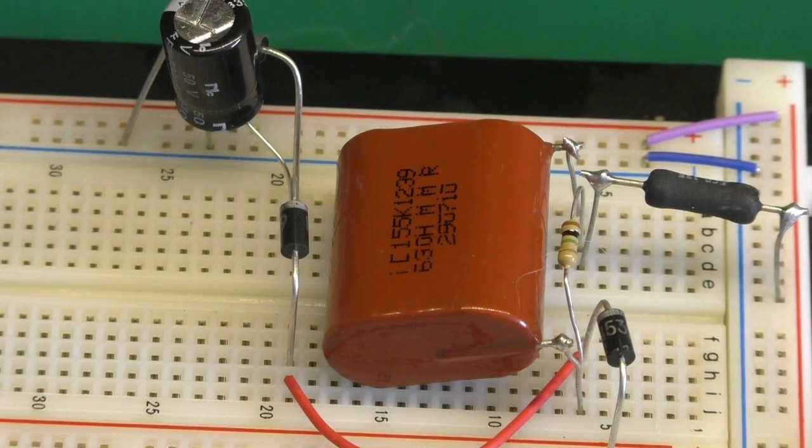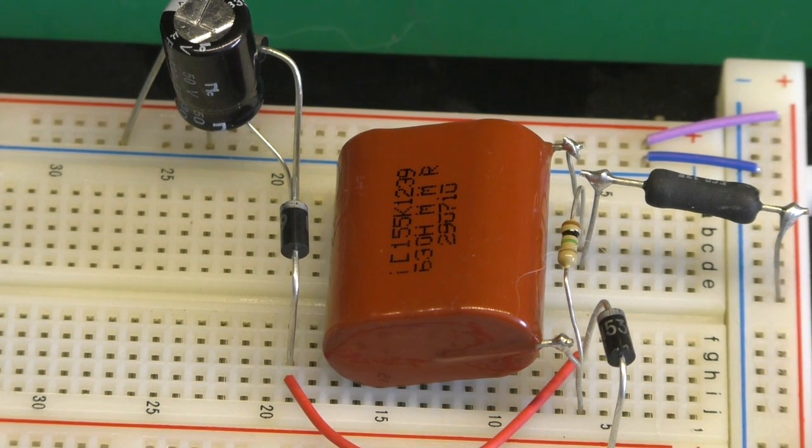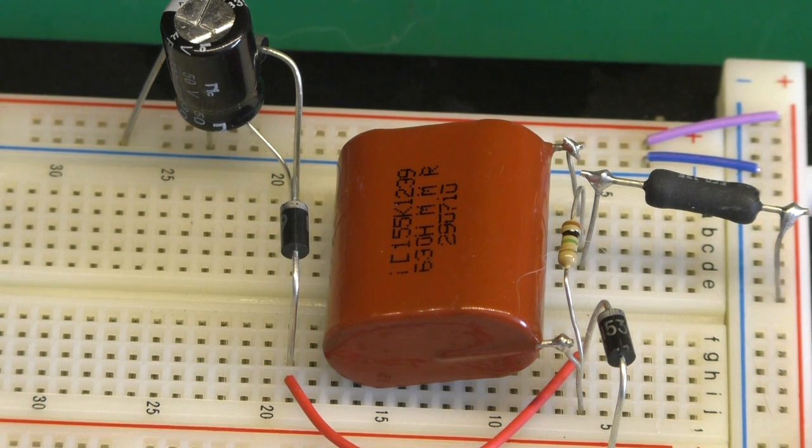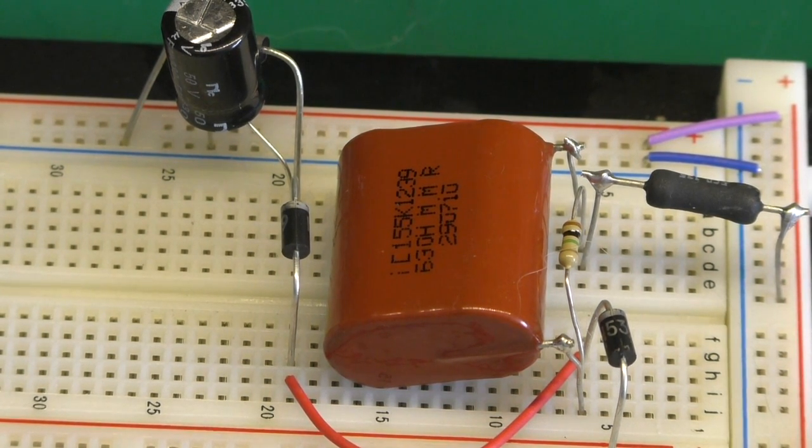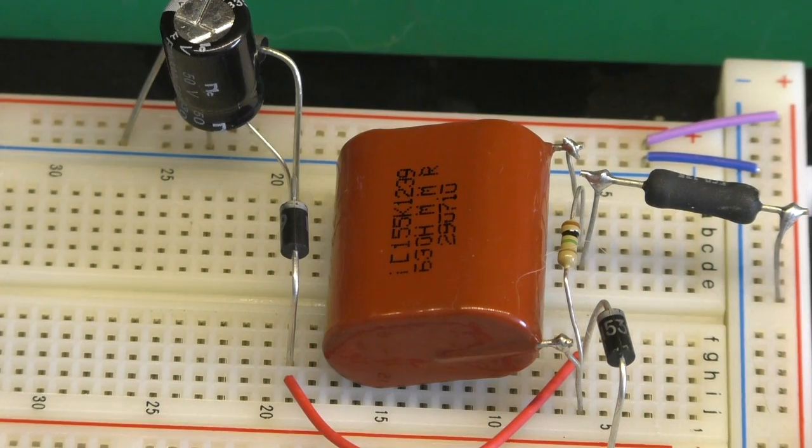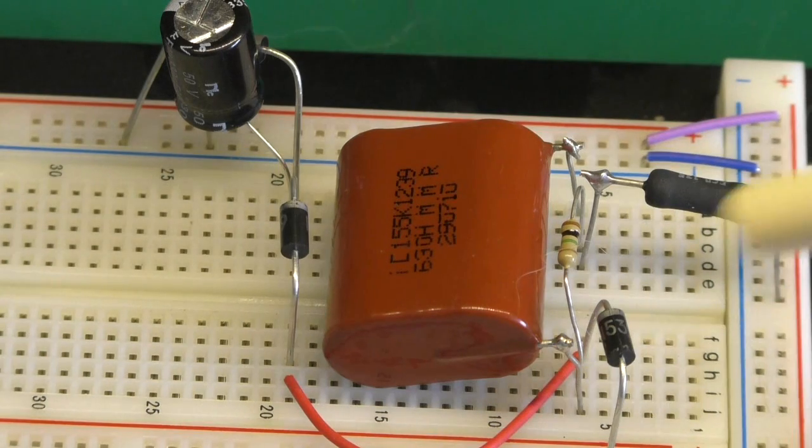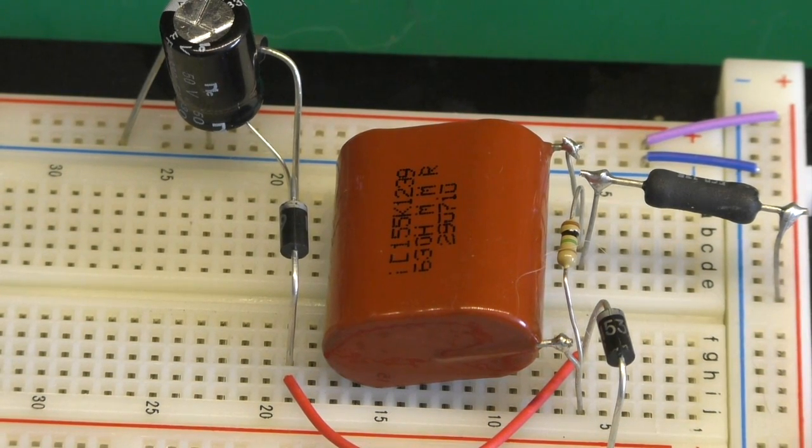I'm going to go ahead and explain this and first of all there are some limitations. The capacitor type is not going to give you the type of current output that a power supply with a transformer is. Basically this end of the circuit is just converting the AC to DC so we can regulate it.